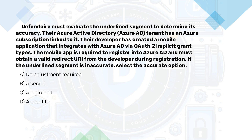If the underlined segment is inaccurate, select the accurate option: A, no adjustment required; B, a secret; C, a login hint; D, a client ID.